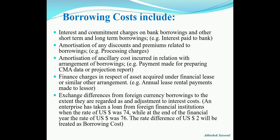Borrowing cost includes five types of costs. First, interest and commitment charges — as explained, interest will be payable to the bank when borrowing has been made. Second, amortization of any discounts and premium related to borrowings. Third, amortization of ancillary costs incurred in relation with arrangement of borrowings. Fourth, finance charges in respect of assets acquired under financial lease — the lessee has to make an annual payment of lease rent to the lessor, and that shall form part of borrowing cost. Fifth, exchange differences arising from foreign currency borrowings, to the extent they are regarded as an adjustment to interest cost.